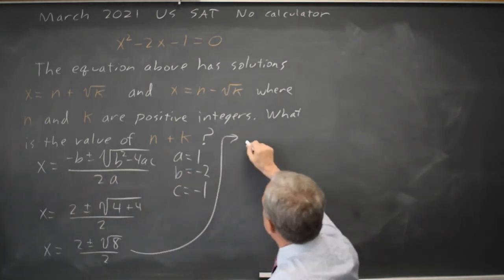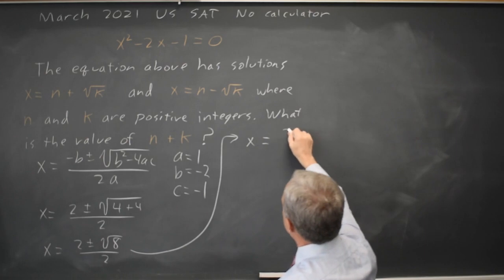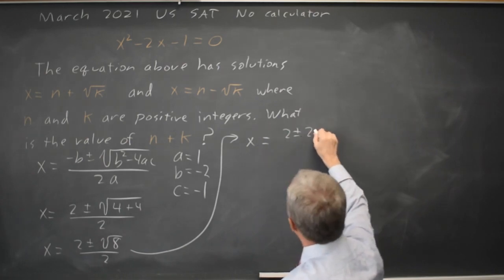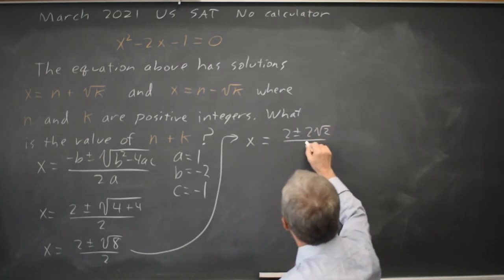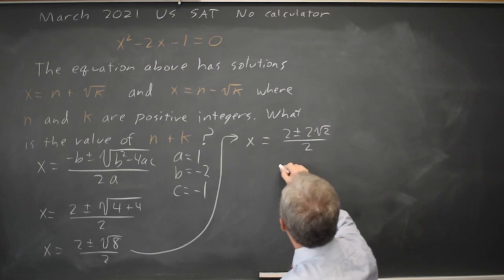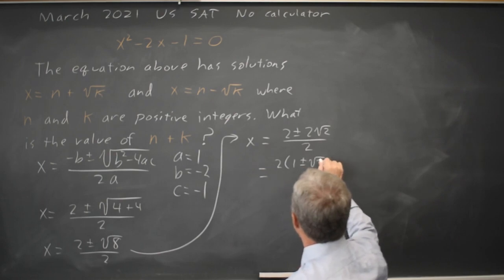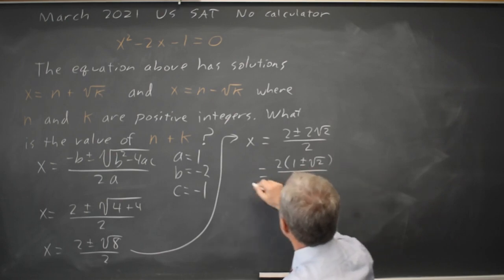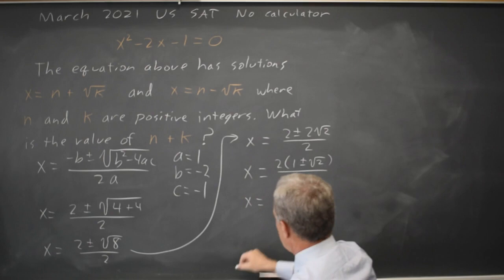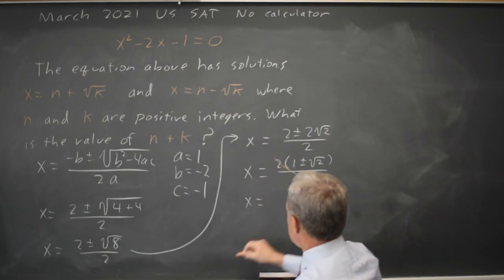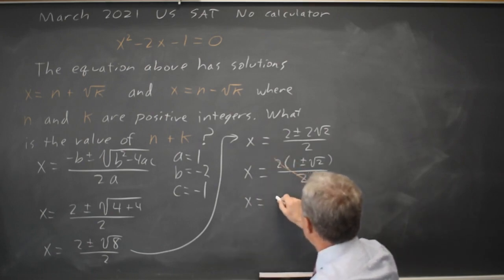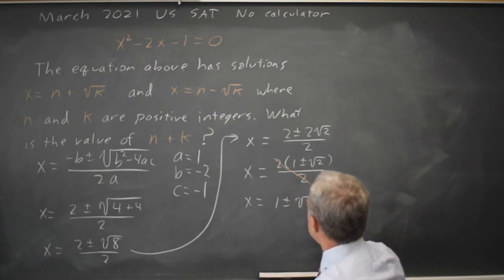And I can rewrite that as X equals 2 plus or minus 2 root 2 over 2. Factoring out a 2 from the numerator, it's 2 times 1 plus or minus root 2 over 2. And 2 over 2 is 1 so I get 1 plus or minus root 2.